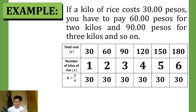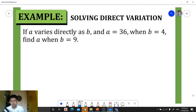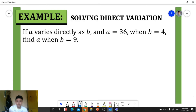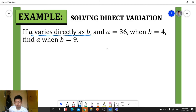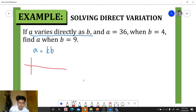Let's have our first example. If a varies directly as b and a is equal to 36 when b is equal to 4, find a when b is 9. First, we identify our equation by translating the statement: 'a varies directly as b' gives us the equation a is equal to k times b.